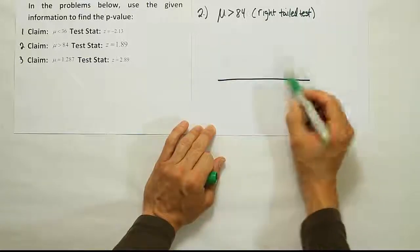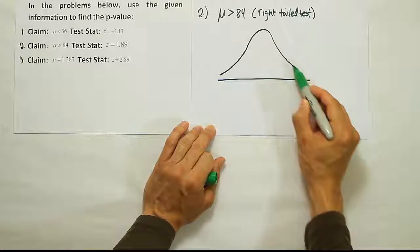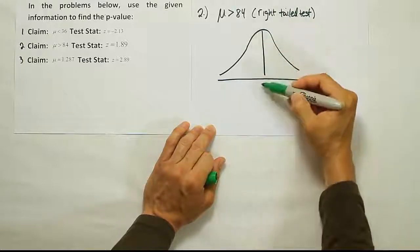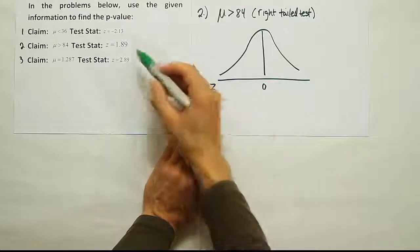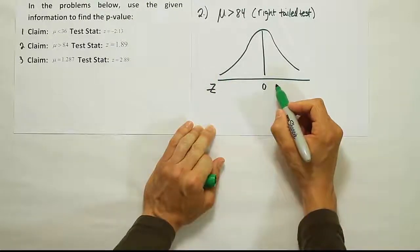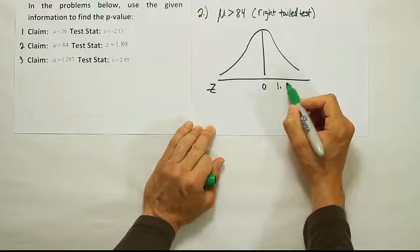Okay, so let's draw a bell curve, label the mean at zero, right? And let's put our test stat where it belongs based on its size. So it's 1.89. 1.89 belongs on the right-hand side of the curve.